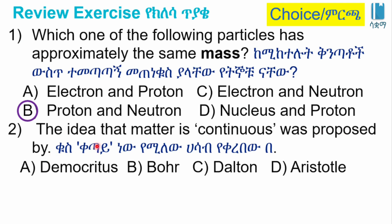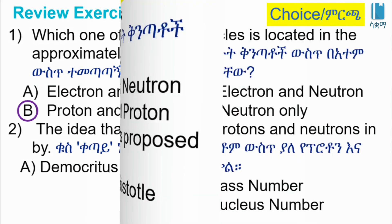Which one of the following — the idea that matter is continuous was proposed by: A: Democritus. B: Bohr. C: Dalton. D: Aristotle. The answer is D, Aristotle — the continuous model. Democritus proposed the discrete particle model.